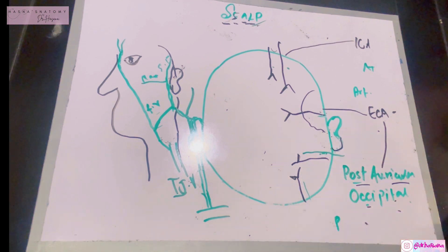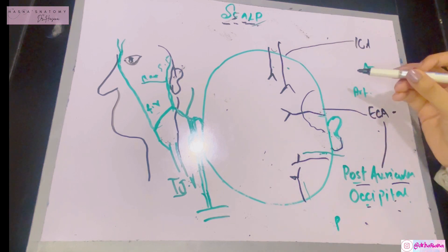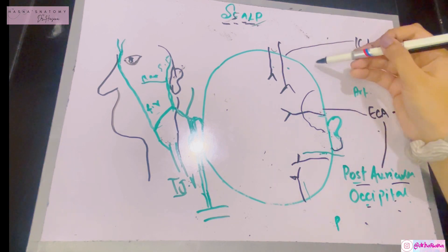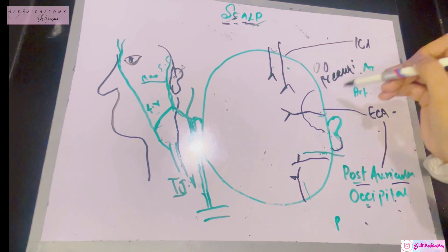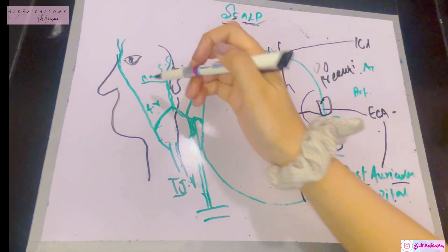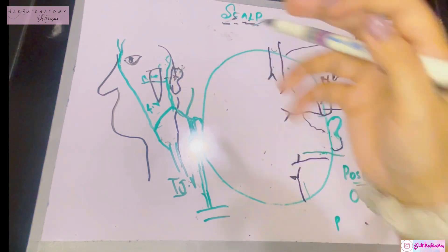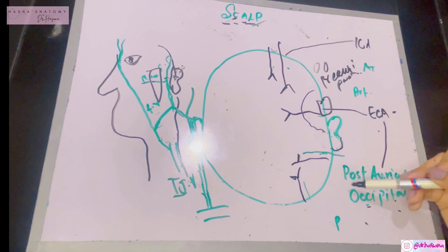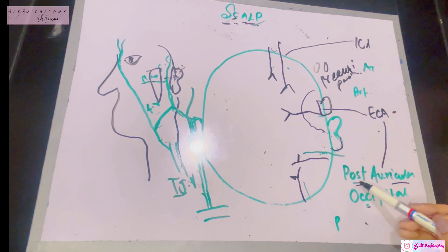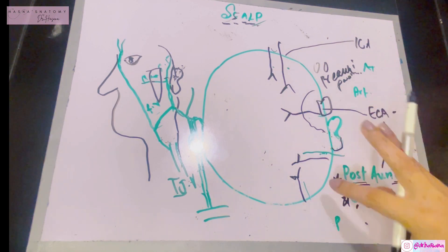The occipital veins drain into the suboccipital venous plexus. For lymph node drainage: anterior to the auricular area, the preauricular and parotid lymph nodes drain the scalp, since the parotid gland lies just in front of the auricular area. Posterior to the auricle, the posterior auricular and occipital nodes are responsible.